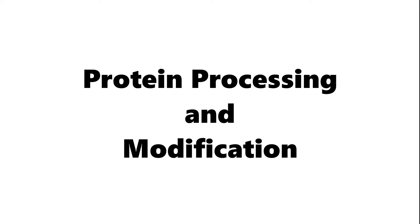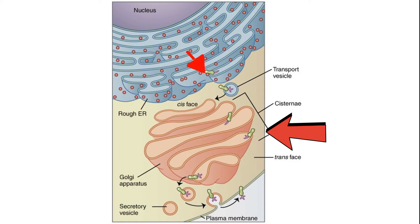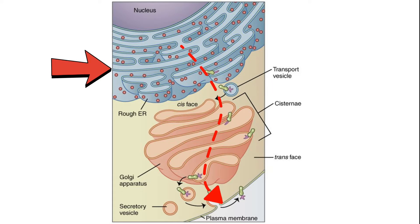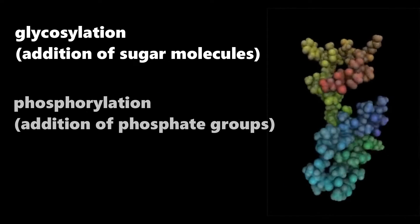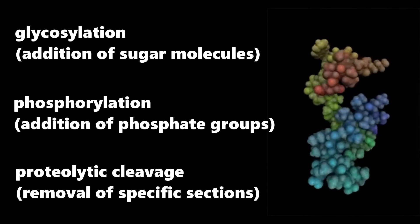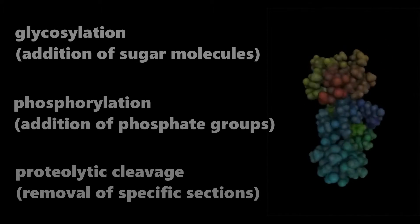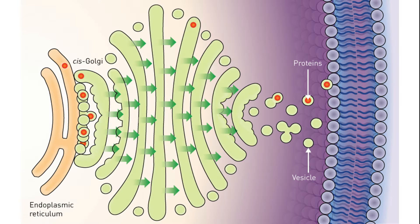Protein processing and modification. The Golgi apparatus serves as a key station for post-translational modification of proteins synthesized in the endoplasmic reticulum. Here, these proteins undergo a series of intricate changes such as glycosylation, phosphorylation, and proteolytic cleavage. These modifications help determine the protein's structure and function.